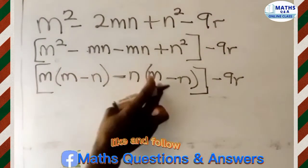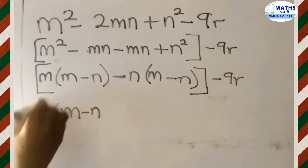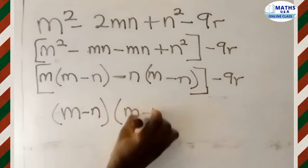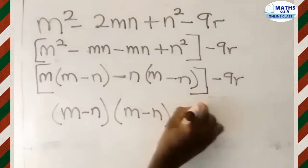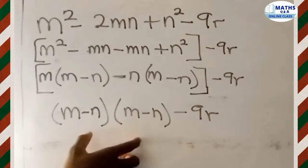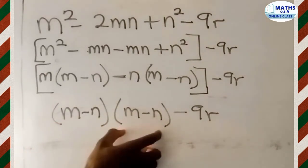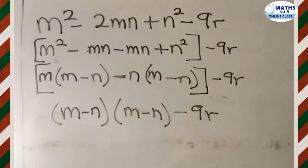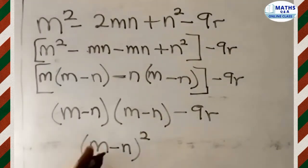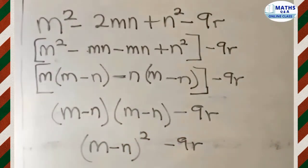We can see that (M minus N) appears in both groups, so we write them as one term. We have (M minus N) times (M minus N) minus 9R. Since (M minus N) is multiplying itself two times, we can write it in square form as (M minus N) squared, minus 9R.